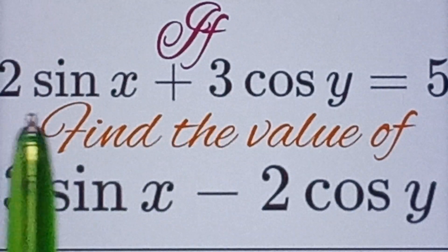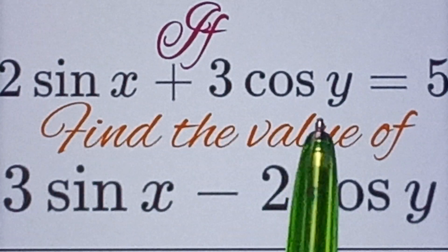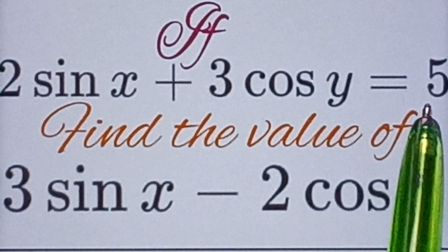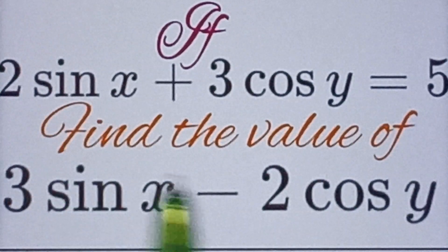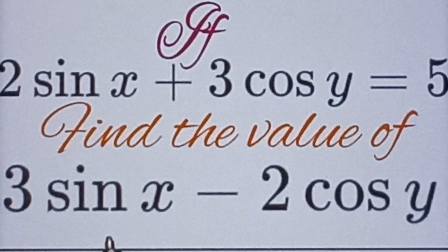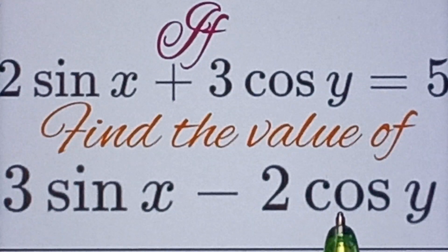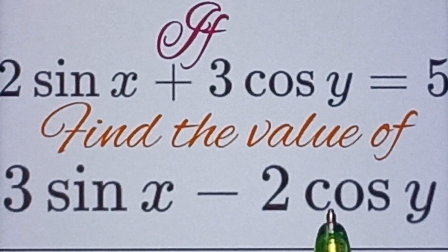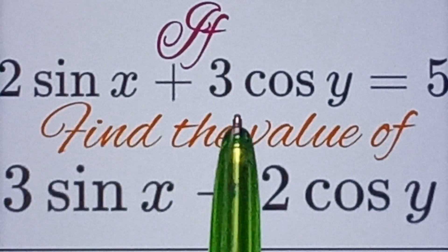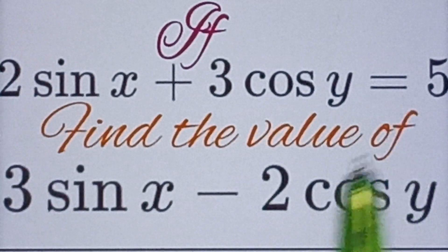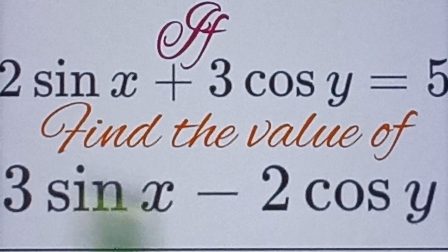If 2 sin x plus 3 cos y equals to 5, then find the value of 3 sin x minus 2 cos y.